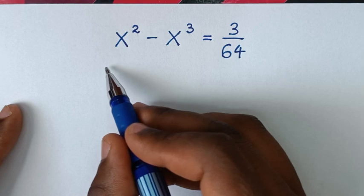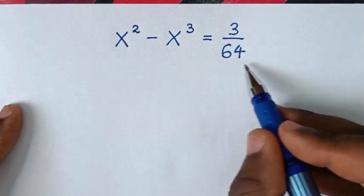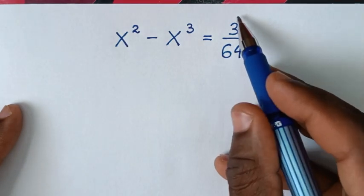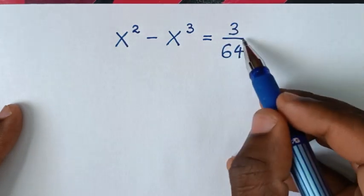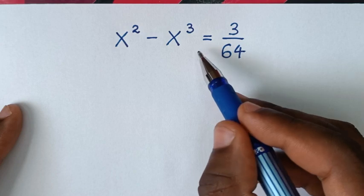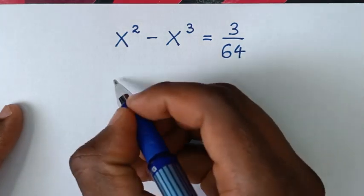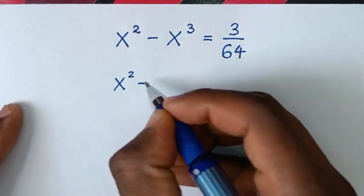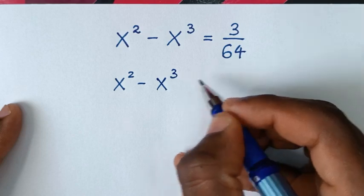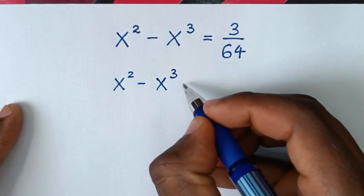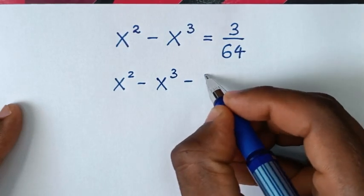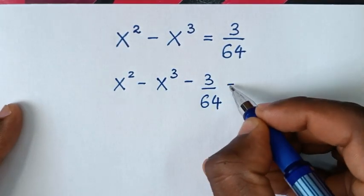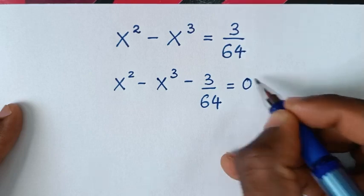To find the values of x from this equation, in the first step, we'll take the 3 over 64 to the left side. So we start with x squared minus x cubed, and this will move to give minus 3 over 64, equal to 0.